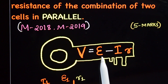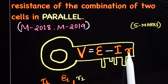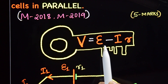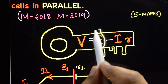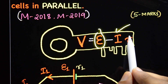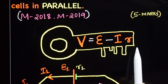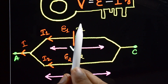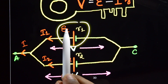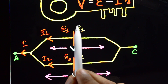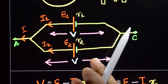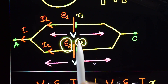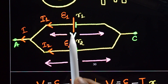In the equation v = e - i·r, v is the terminal potential difference, e is the EMF of the cell, i is the current, and small r is the internal resistance of the cell. Suppose two cells are connected in parallel: cell one has EMF e1 and internal resistance r1, and cell two has EMF e2 and internal resistance r2.